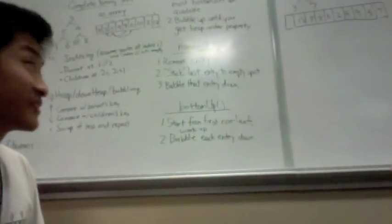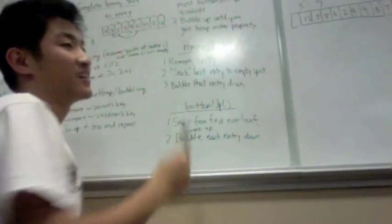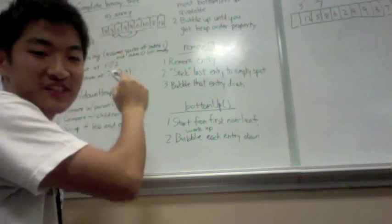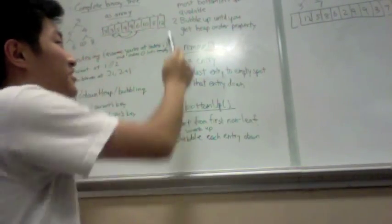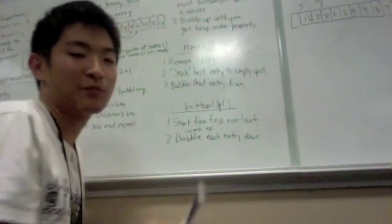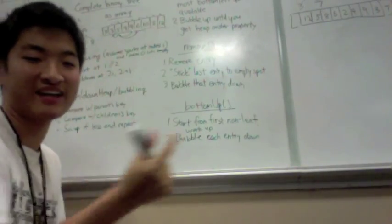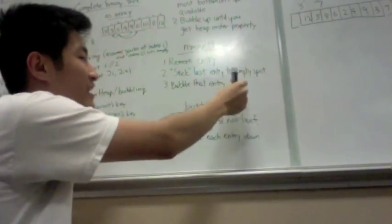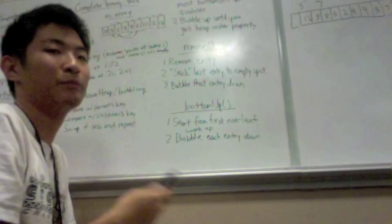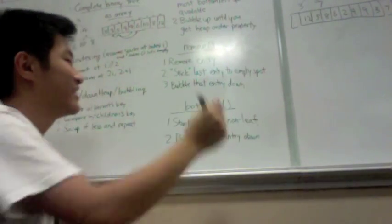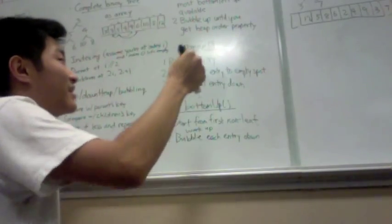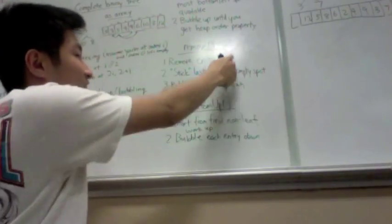So without further ado, let's move on to the algorithms. Insert: first you place the new entry at the very next free slot in the complete binary tree, which is near the bottom left, and you bubble up until you get the heap order property satisfied. So you're adding and you're moving it up. For remove, you remove the entry, you stick the last entry, remember that this is a complete binary tree, stick it to the empty spot, and bubble that entry down. So instead of moving up like insert, you're moving down for remove.